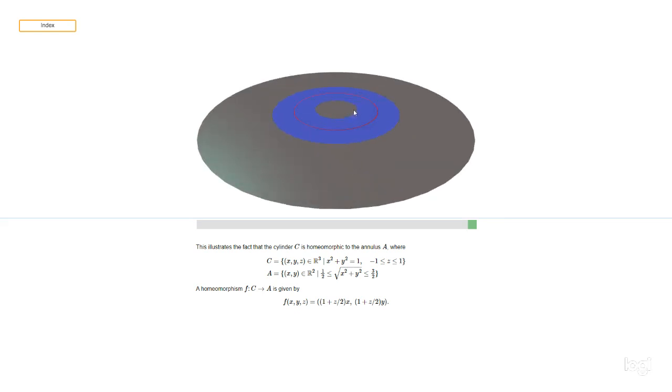So that's this space here. It's all in the xy plane and we've got points—here's the origin, these are the points that are distance a half from the origin, distance one from the origin, distance three halves from the origin. So in between the distance a half and distance three halves, that's our set A.